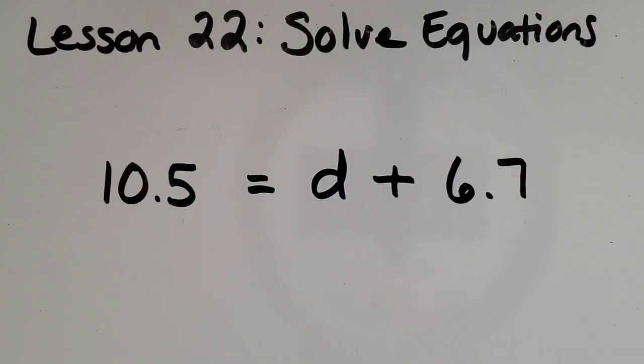Now let's try one with some decimal numbers. I have 10.5 on this side of the equal sign, and it needs to be equal to a mystery number plus 6.7, six and seven tenths. So pause the video and see if you can find the amount for D.